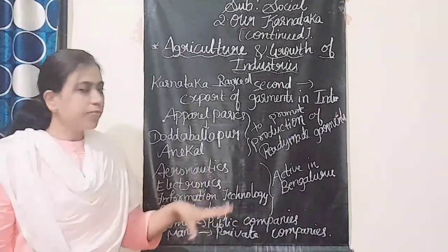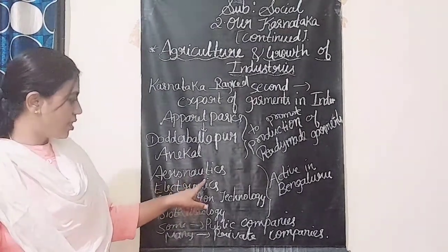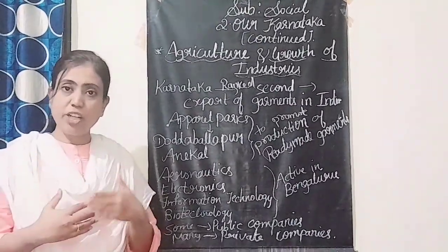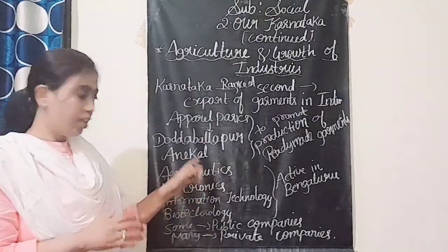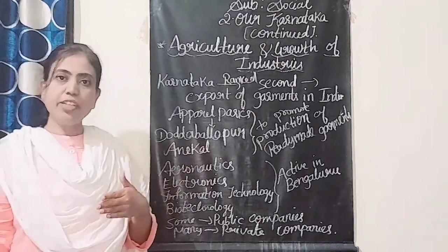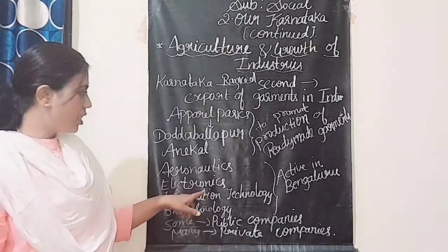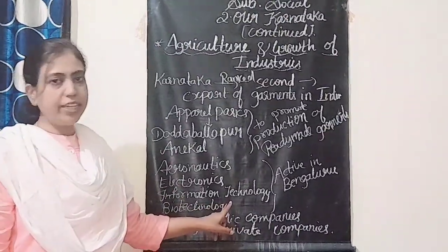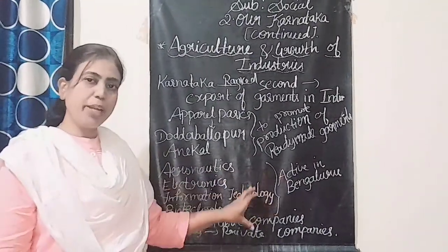Some more industries are active in the Bengaluru division, such as aeronautics — which involves manufacturing of aeroplane parts assembled in Bengaluru — electronics industries producing TVs, fridges, mixers, and grinders, as well as information technology and biotechnology industries.